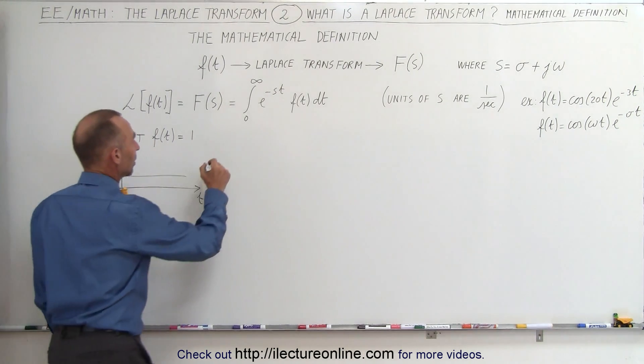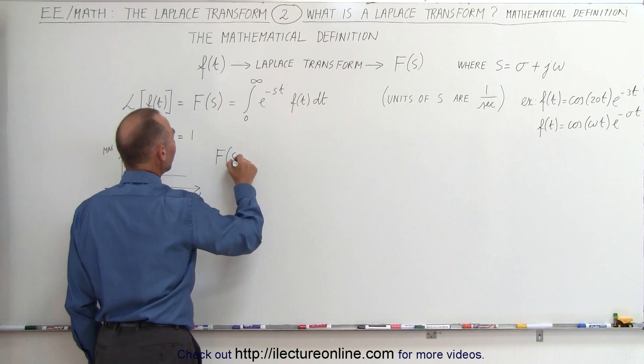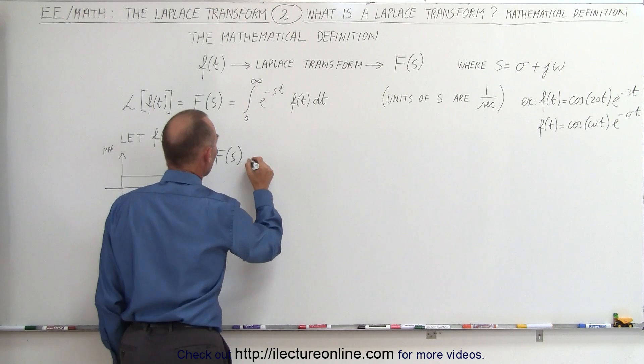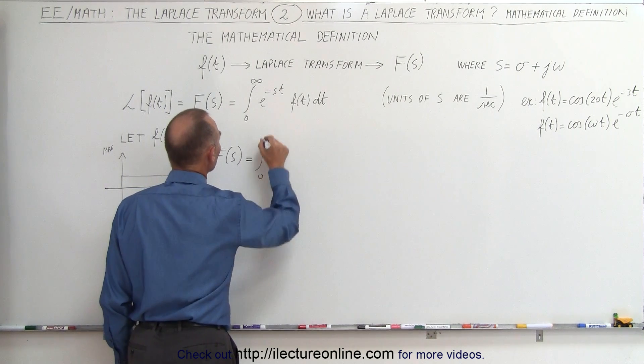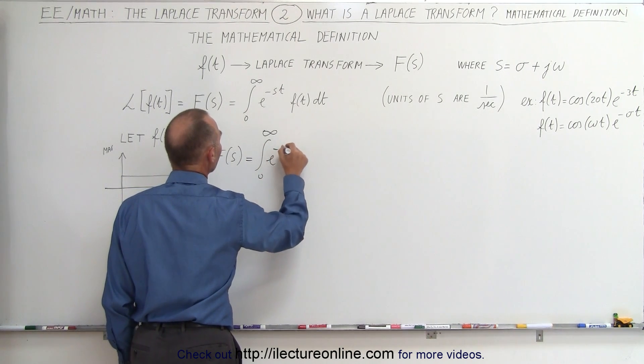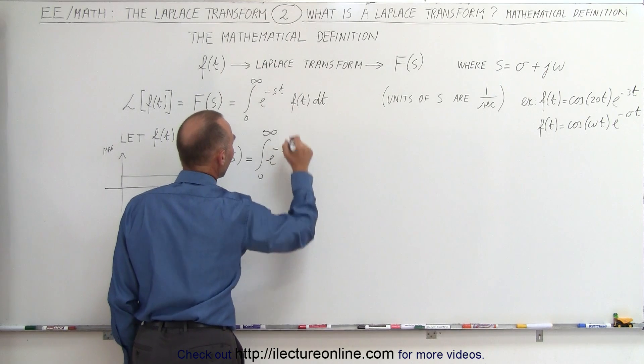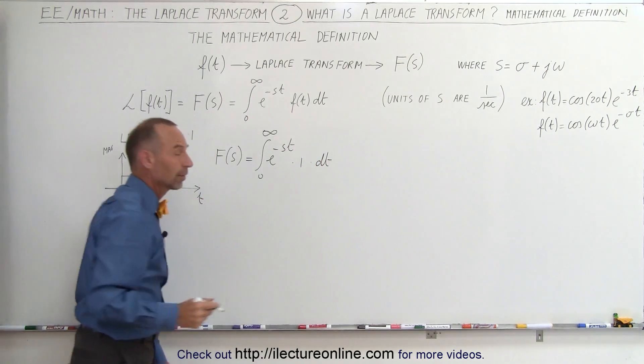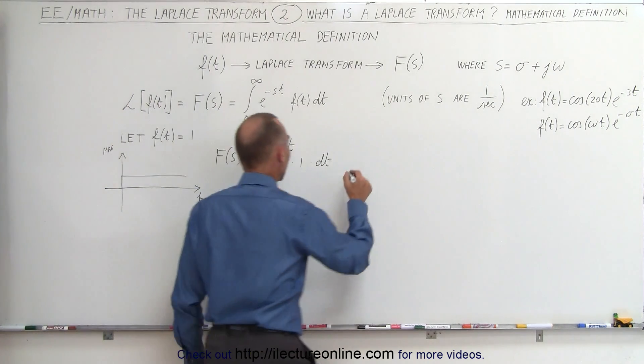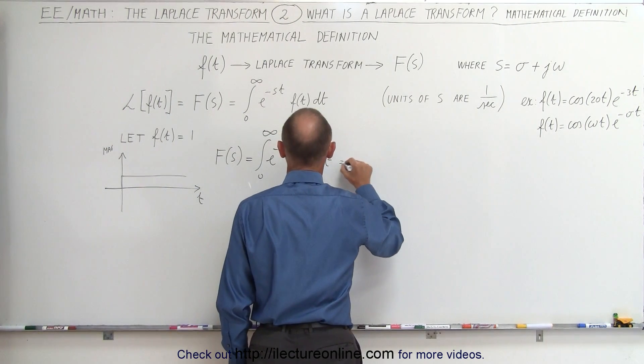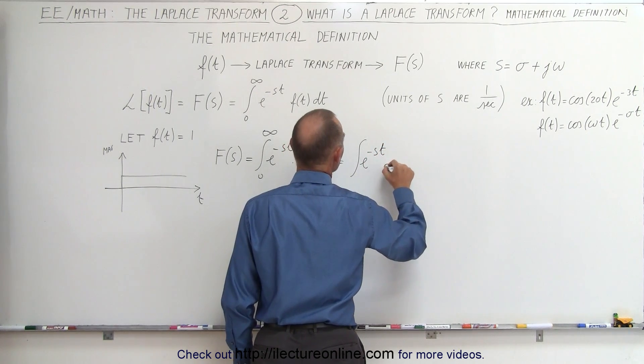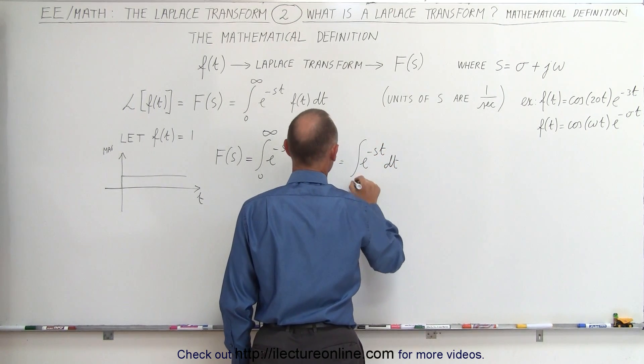Well, we can see here that f of s, so now that we have it converted to the complex frequency domain, is equal to the integral from 0 to infinity of e to the minus st times 1 times dt. That simply becomes the integral of e to the minus st dt. So this is equal to the integral of e to the minus st dt from 0 to infinity.